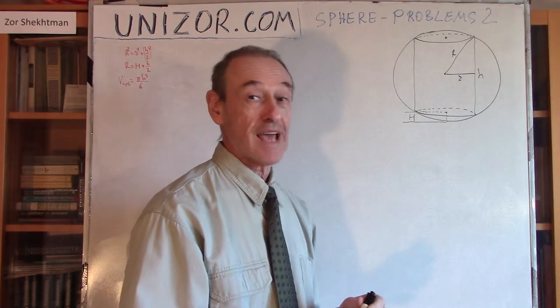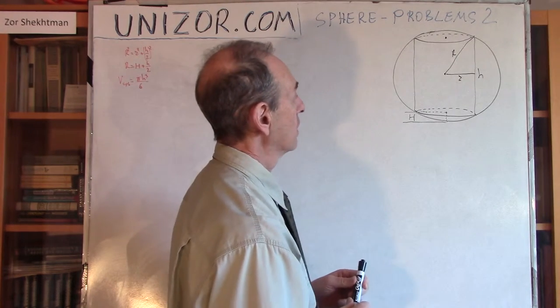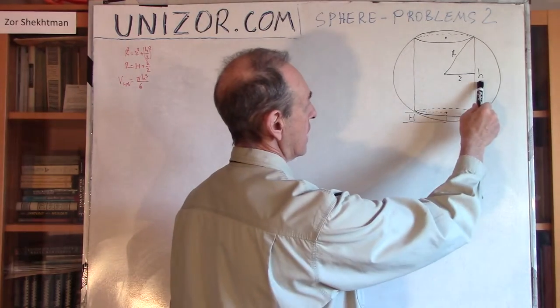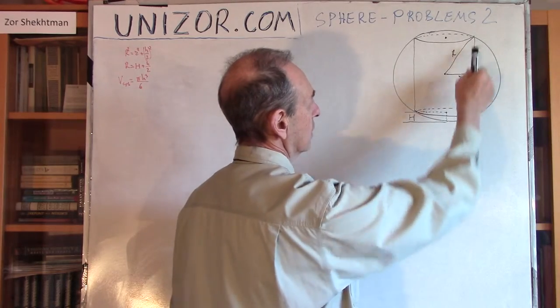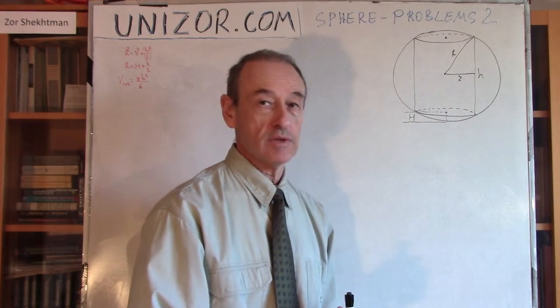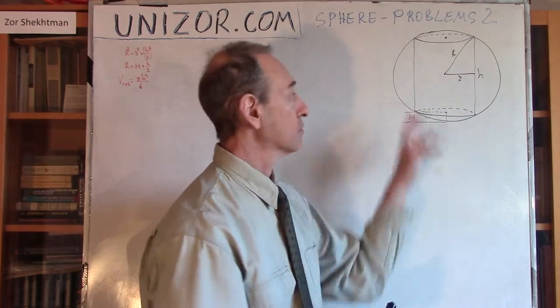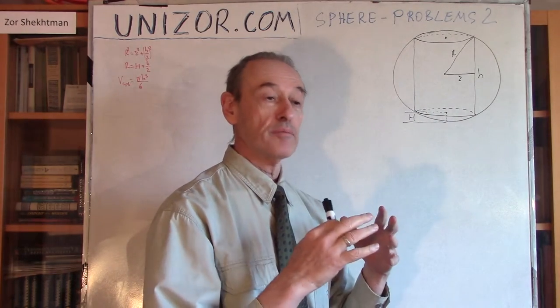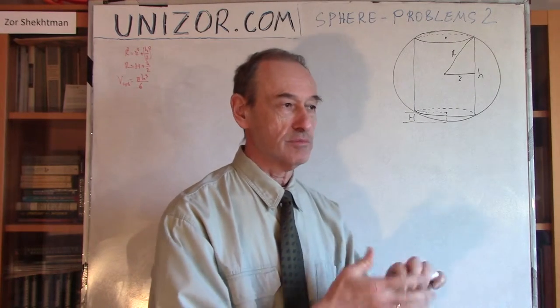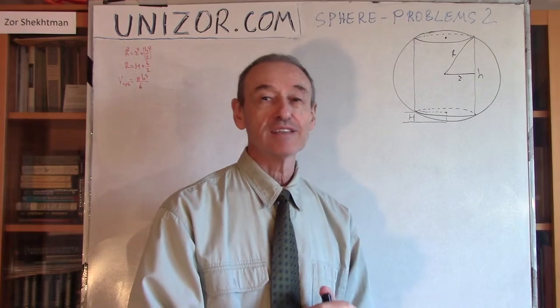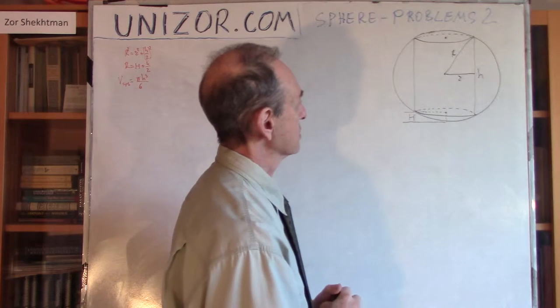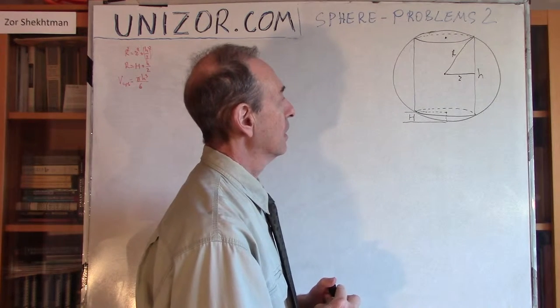there is only one parameter which is actually sufficient to determine the volume of the remaining part after we drill this cylinder in. It's the H, the height of that cylinder. Apparently, if just this one parameter is given without the radius of the sphere, without the radius of the cylinder, whatever, everything else seems to be just going, putting together a nice formula for the remaining volume after the drilling process. So, just one parameter, H is given. Nothing else.